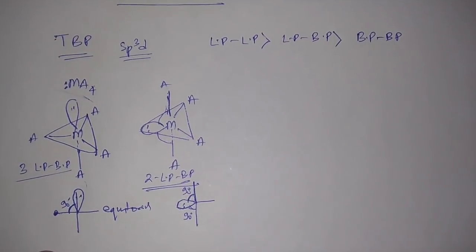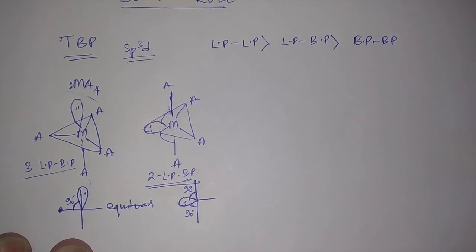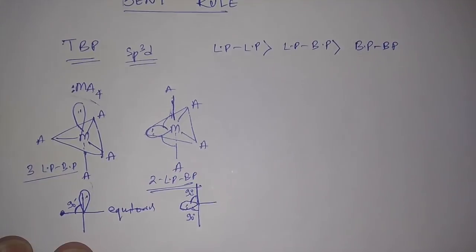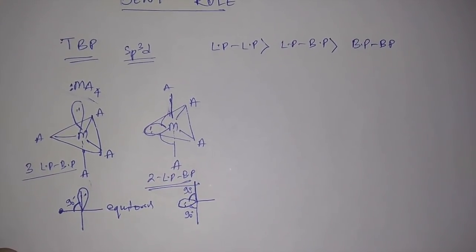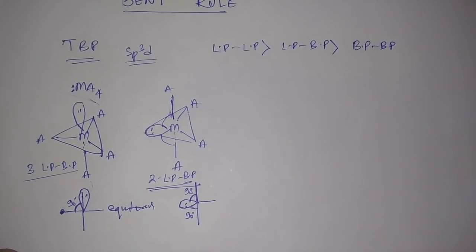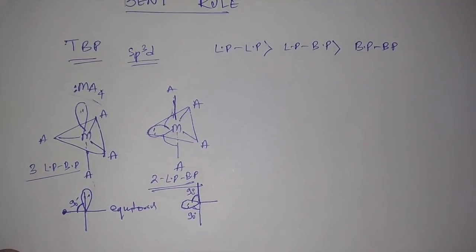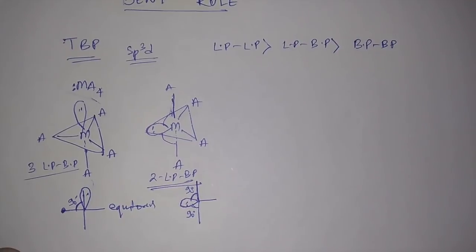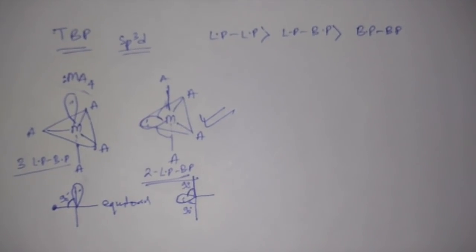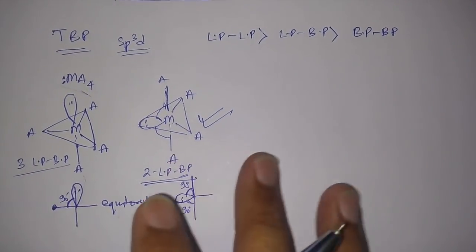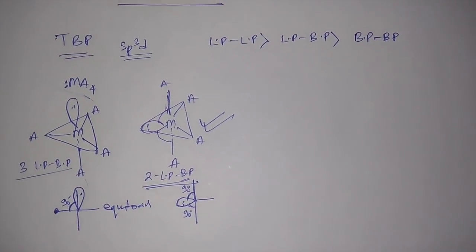This tells us that in a trigonal bipyramidal geometry, if a molecule has a lone pair, that lone pair will prefer the equatorial position. When it is on the equatorial position, it has lesser lone pair–bond pair repulsion, making the molecule more stable. This is the correct and more stable structure. This applies when all the surrounding atoms are the same; when the surrounding atoms are different, the Bent's Rule comes into play.